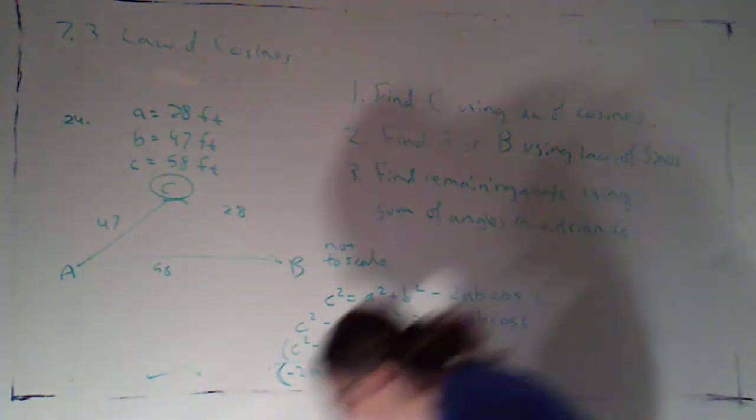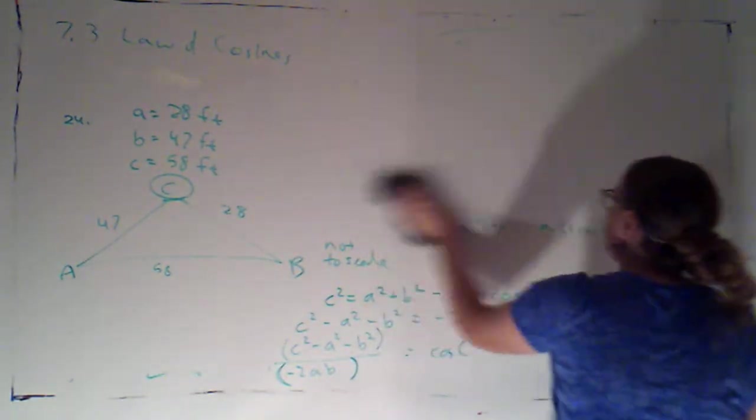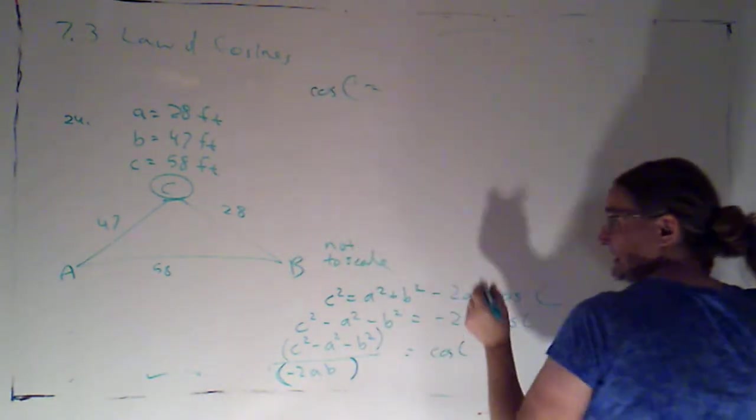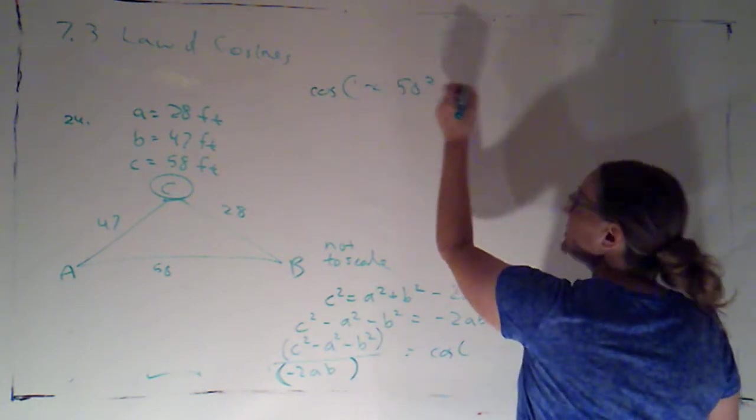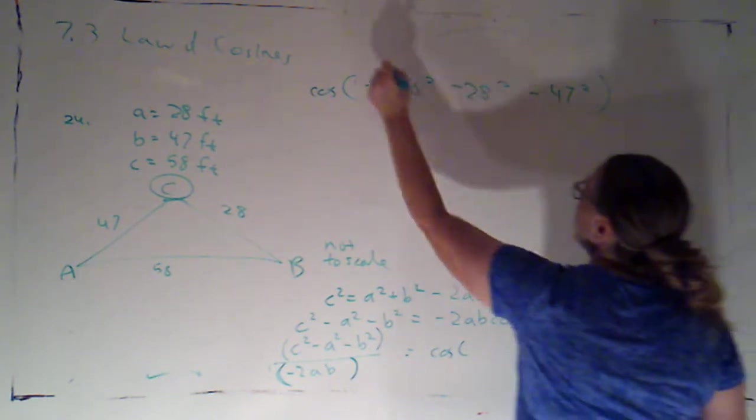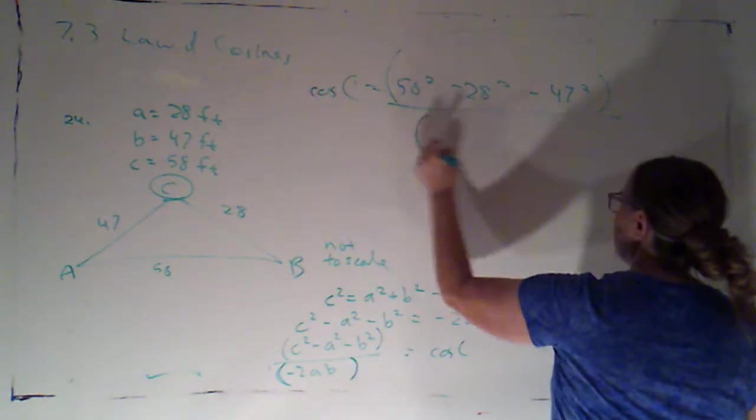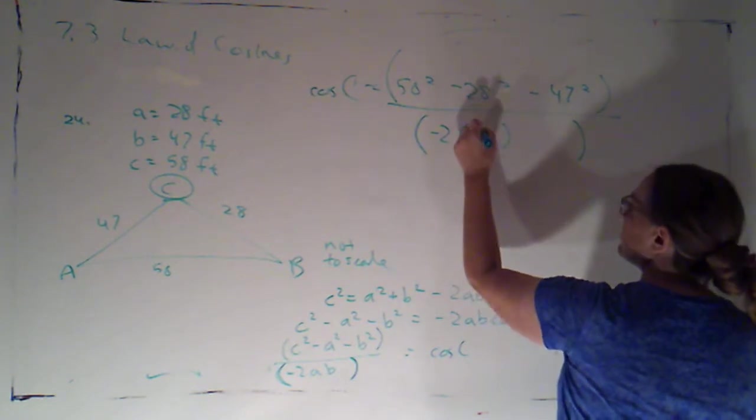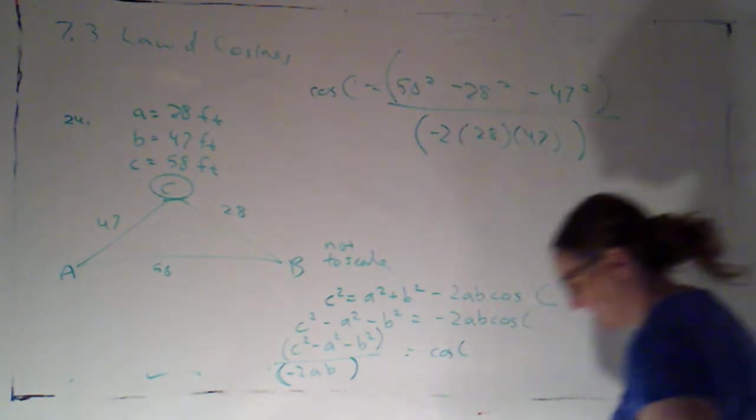Okay. So let's see. I need some more space. So cosine of C is 58 squared minus A squared was 28 squared minus 47 squared. There are parentheses around that, although I'll probably just equal that out once I plug it in. Super important parentheses are around the bottom over negative 2 times 28 times 47.